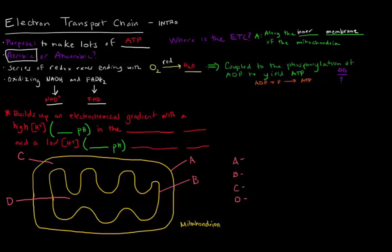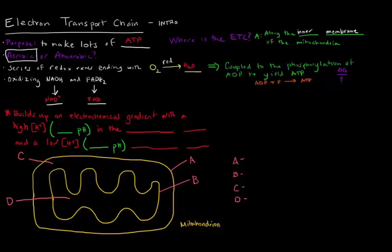The electron transport chain, as I mentioned, is a series of redox reactions ending with going from oxygen to water. That series of redox reactions is coupled to the phosphorylation of ADP to yield ATP, because we want to make ATP in the electron transport chain.